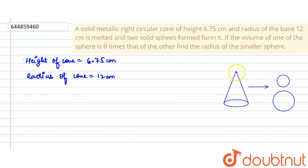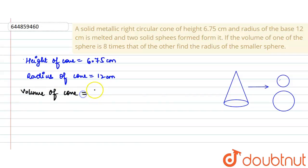When you melt the cone, the volume of the material used to make this cone will be equal to the volume of these two spheres combined, because no other material has been added or removed. So therefore, the volume of this solid metal cone will equal the sum of the volumes of the two spheres.